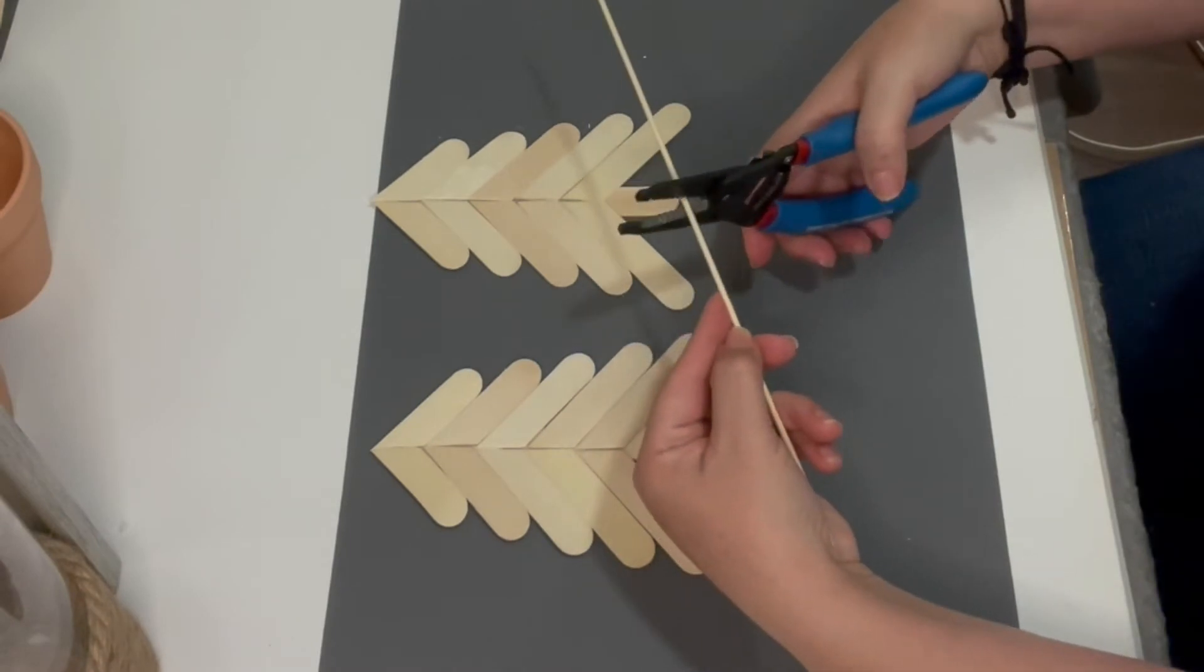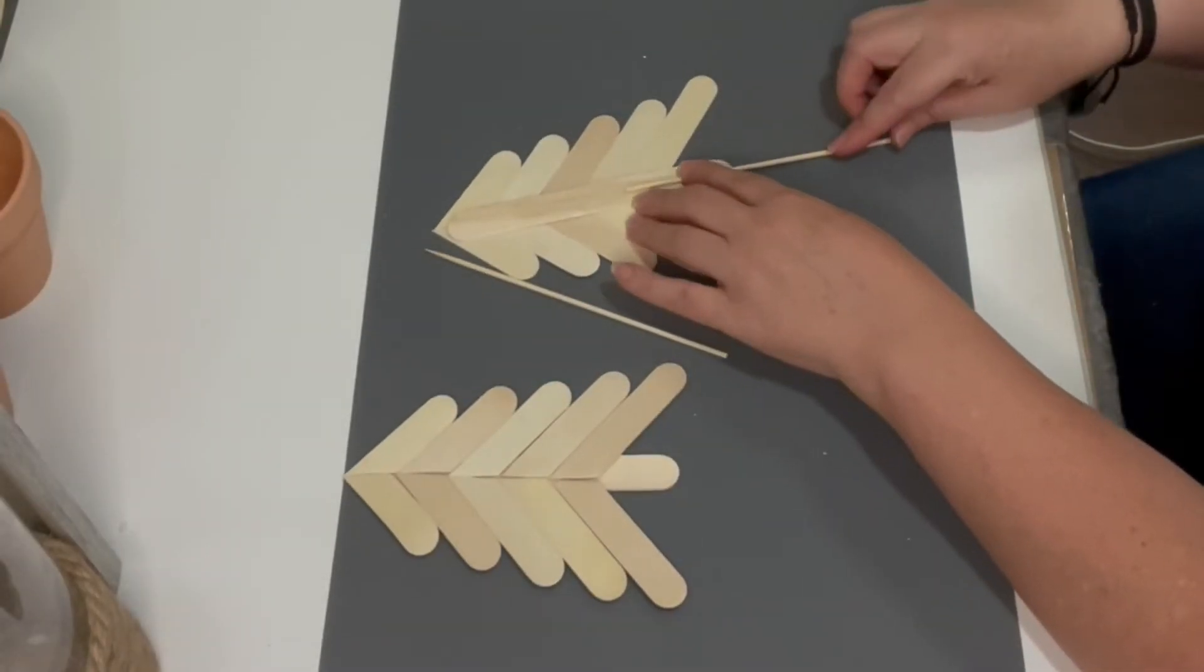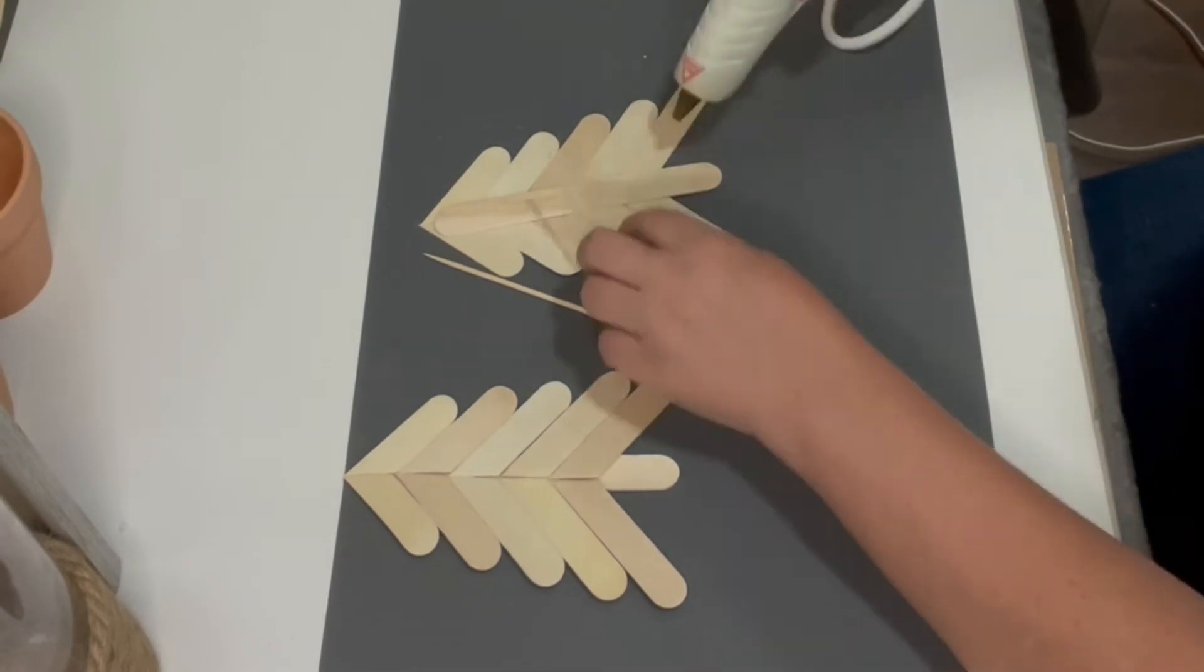We're going to use a skewer stick to insert these trees into my terracotta pots. So what I did is I cut it in half and glued it to the back of the tree.